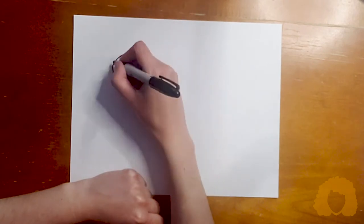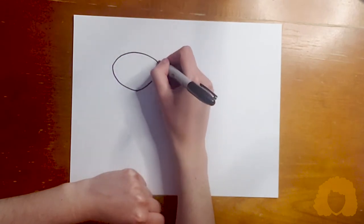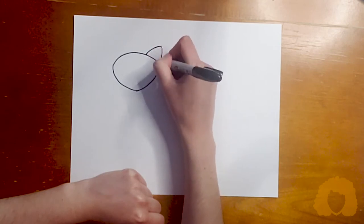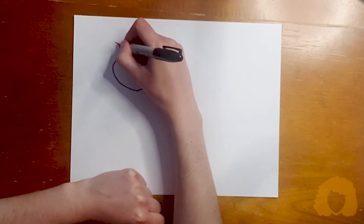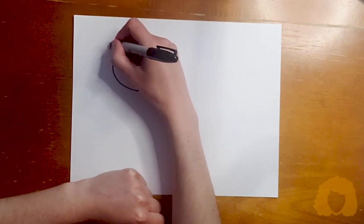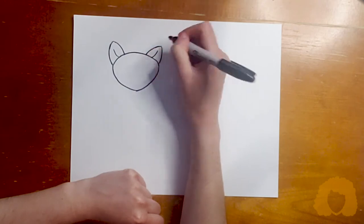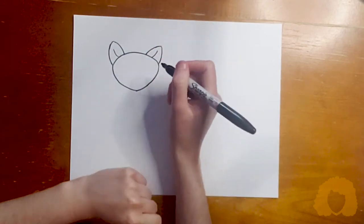Our next step is I'm going to do two small triangle ears, and I like to put a line down each of them just to make them a little more three-dimensional.